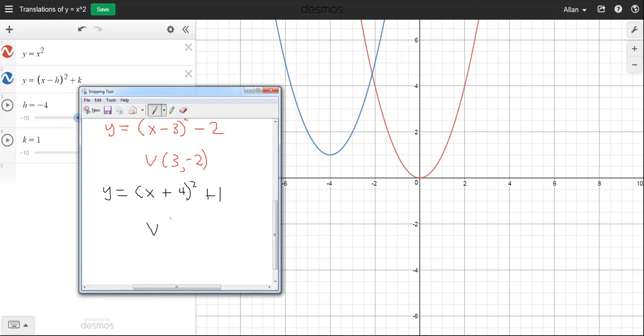And the vertex, if we look at the vertex, it's left four and up one. So we'll be at negative four, comma, one.